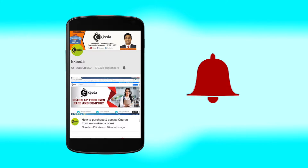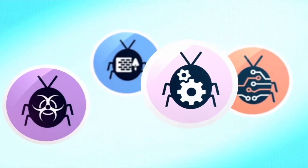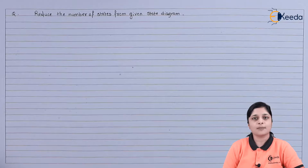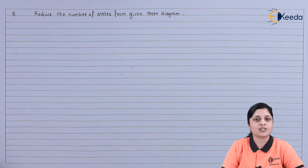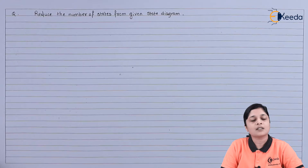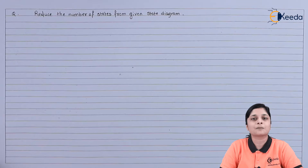Hello friends, now we are going to discuss the numerical based on row elimination method — how to reduce the number of states from a given state diagram. Row elimination method is one of the state reduction techniques used to reduce the number of states while designing a circuit, ultimately reducing complexity. We will solve the given problem using this method and draw the given state diagram for simplification.